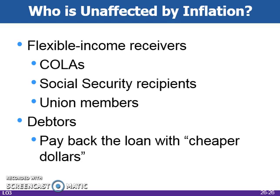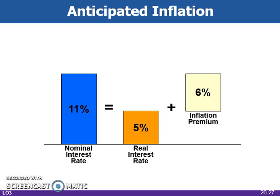Debtors, or borrowers, can actually be helped by unanticipated inflation because interest payments may be less than the inflation rate — borrowers receive dear money and are paying back cheap dollars. If inflation is anticipated, lenders plan ahead. The inflation premium is the amount by which the interest rate is raised to cover the effects of anticipated inflation.